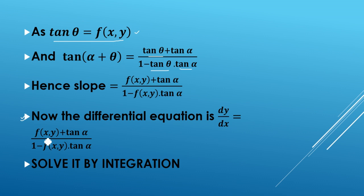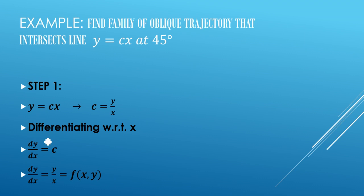Now how to solve this problem we will discuss one example. If we have oblique trajectory, we will know that it's oblique because if we have a degree or angle given, obviously it is not 90 degrees. It means oblique trajectory. Step 1: y = cx, so c = y/x.